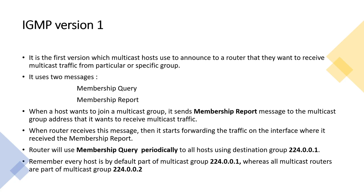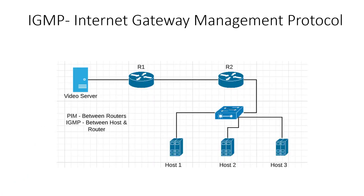Let me take you to the diagram. If host one wants to receive multicast traffic it will send a membership report to the router. The router then goes to the video server, gets the traffic, and sends it back on the same interface — because on that interface it received the report.